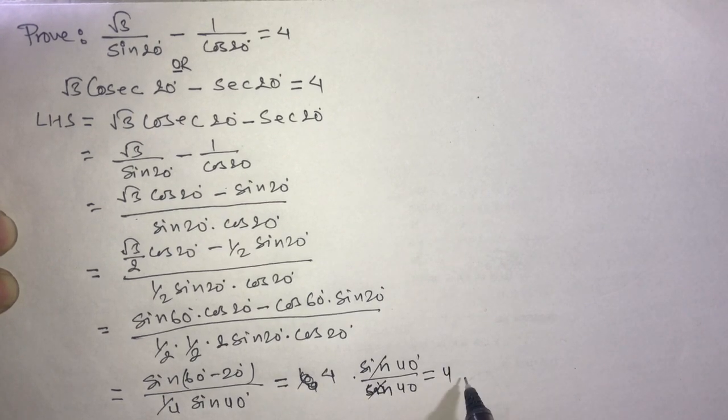Sine 40 degree cancels. This equals 4, which equals RHS. Proved.